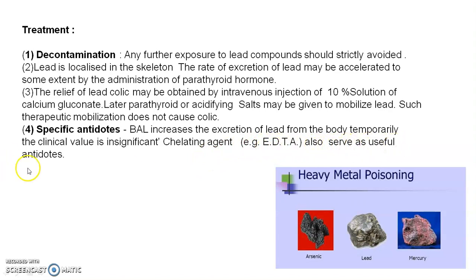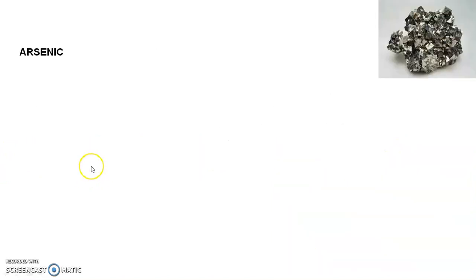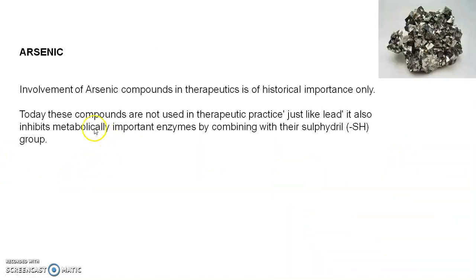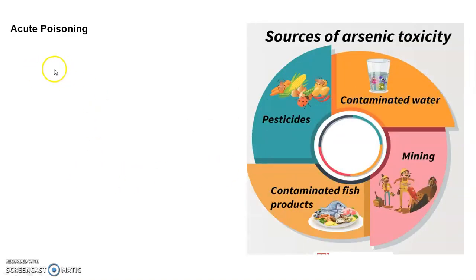The next heavy metal is arsenic. The involvement of arsenic compounds in therapeutics is of historical importance only — these compounds are not used in therapeutic practice today. Just like lead, arsenic also inhibits metabolically important enzymes by binding with their sulfhydryl (SH) groups, which are necessary for metabolic processes.